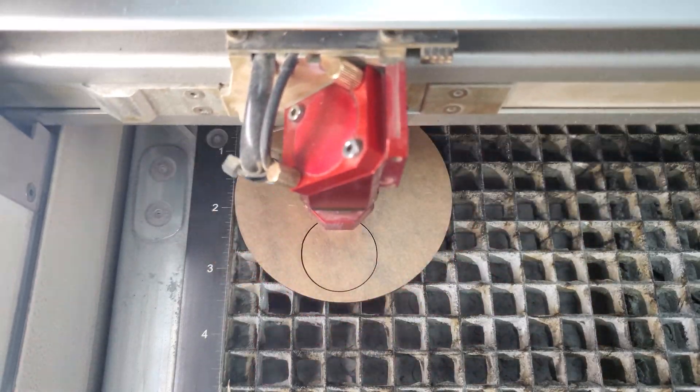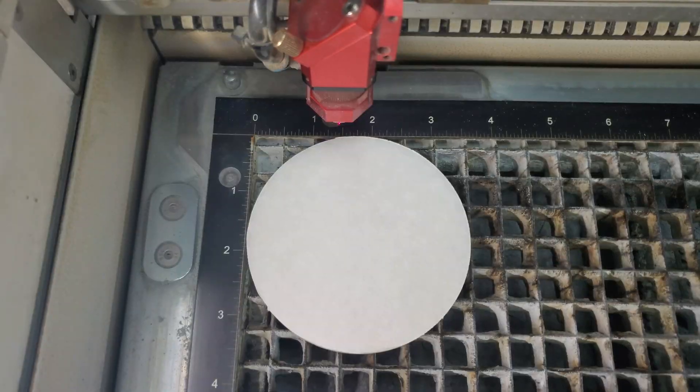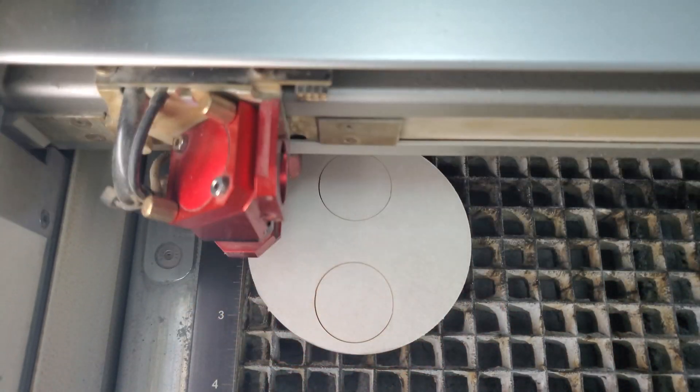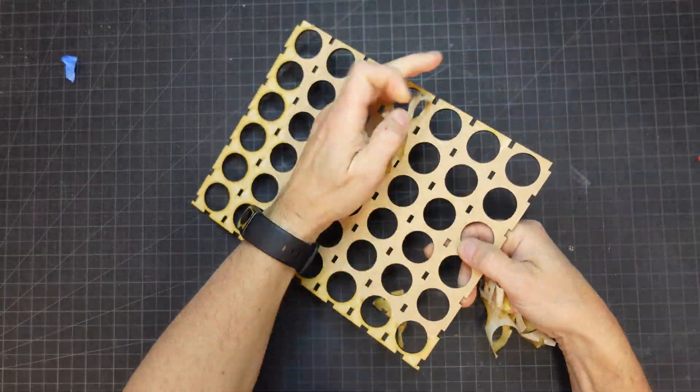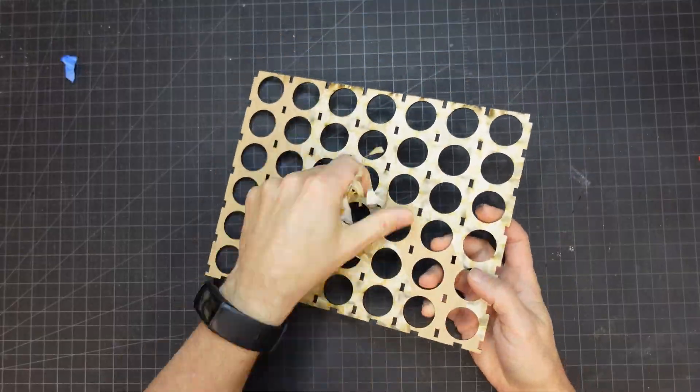I cut the game pieces out of some scraps of eighth inch black and white cast acrylic. All the materials used will be listed with links in the description below. After all the lasering was completed, the masking and all the parts were removed.